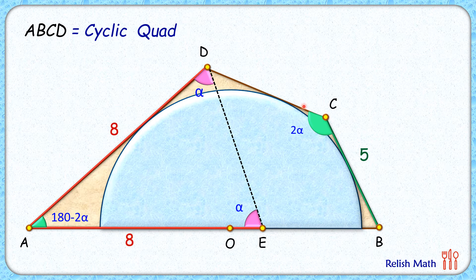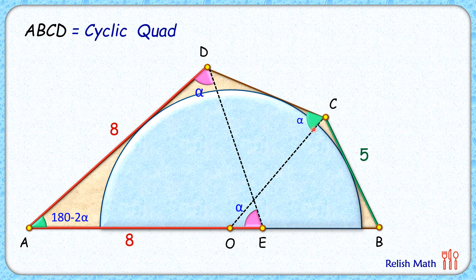From point C two tangents are drawn, CD and CB. By theorem, the line joining O to C will bisect this angle, so this individual angle here will be alpha degrees.